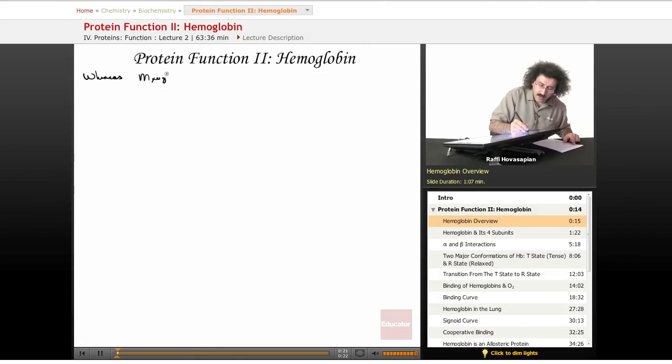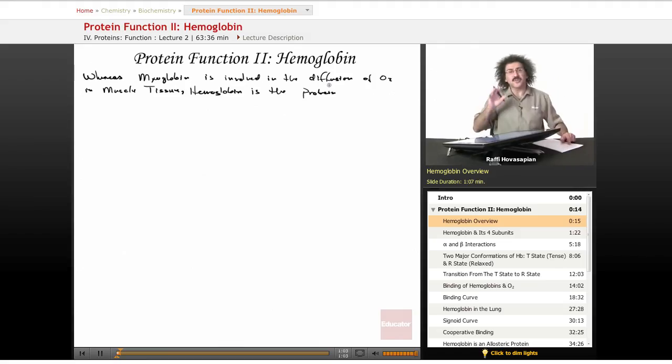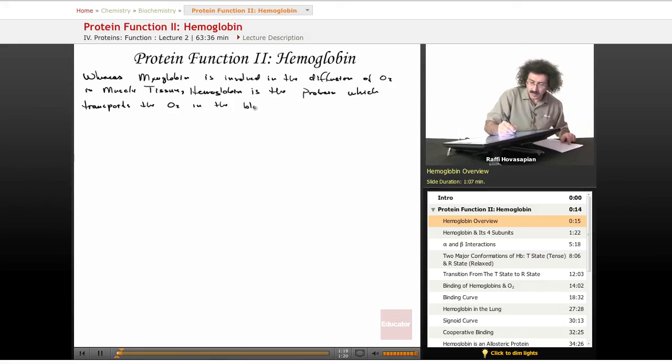Whereas myoglobin is involved in the diffusion of O2 in muscle tissue, hemoglobin is the protein which transports the O2 in the blood.